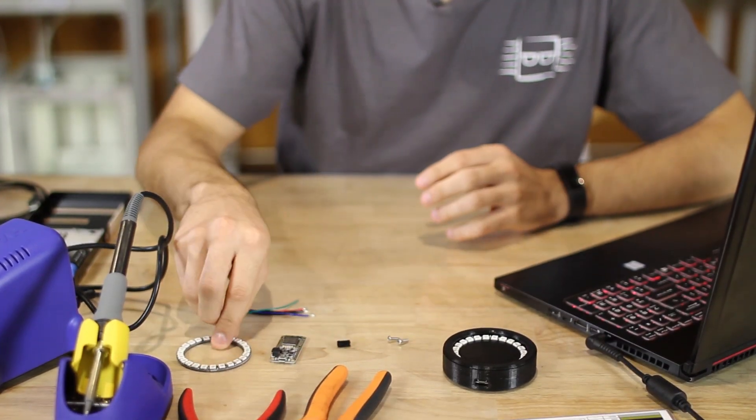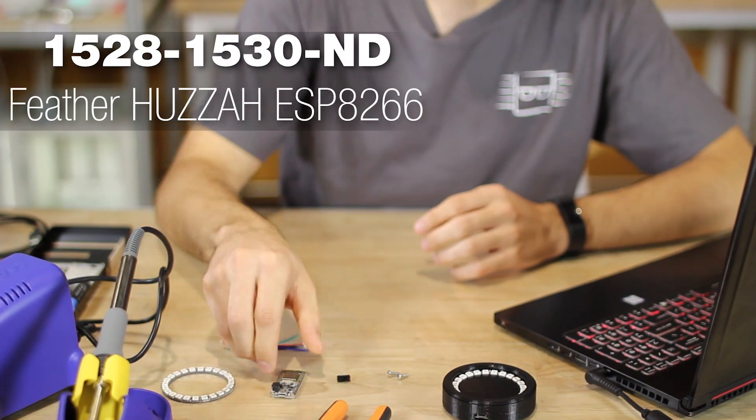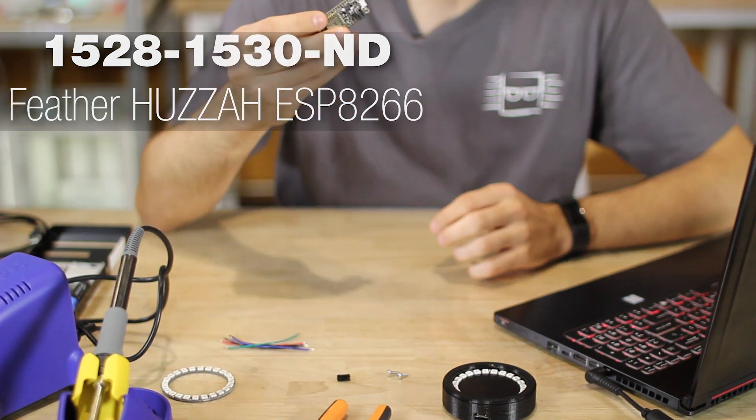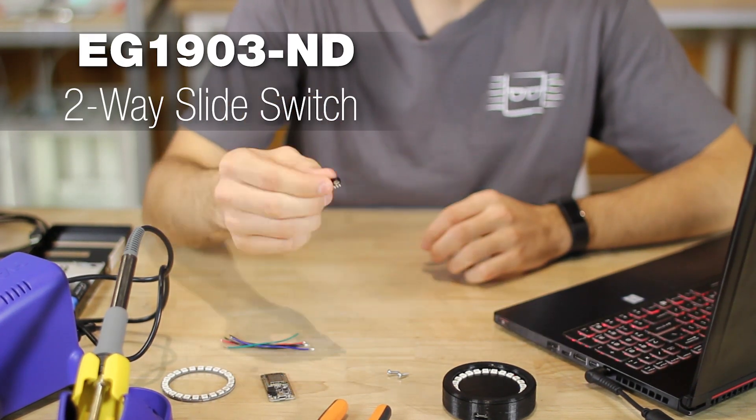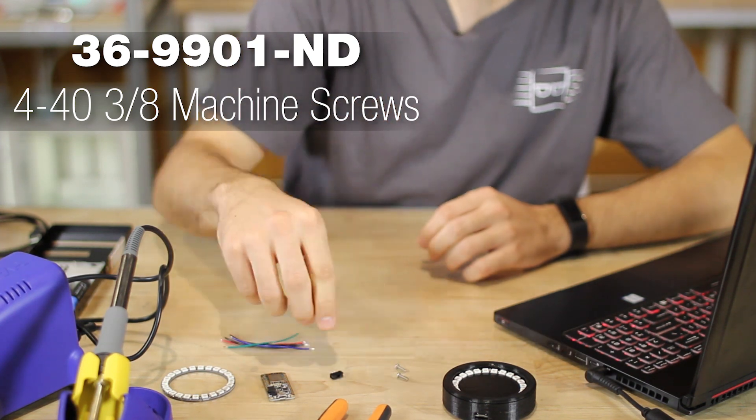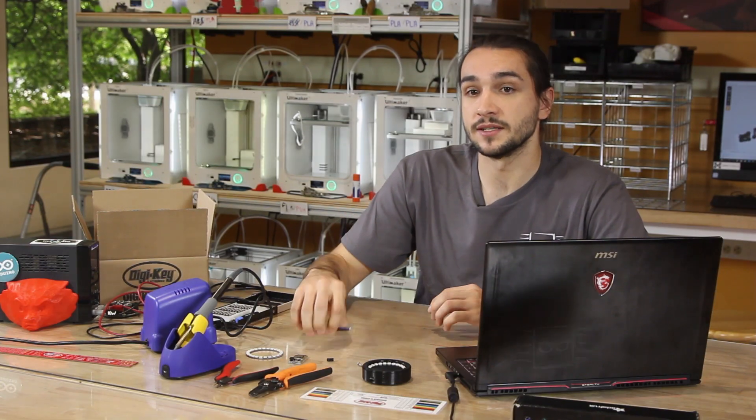And for parts, we have a NeoPixel ring of LEDs, the Feather Huzzah Wi-Fi board, two-way switch, two 440 machine screws, and five pieces of wire around eight centimeters long.